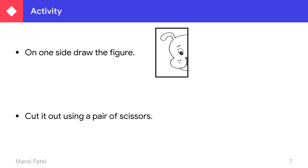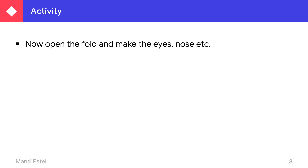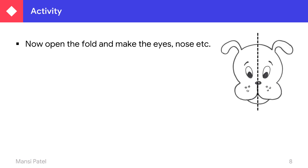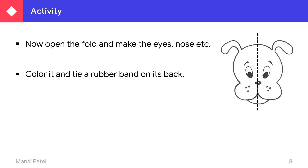Cut it out using a pair of scissors. What you have to do — you have to just cut this extra blank paper. When you cut this blank paper with the help of the scissors, your half portion looks like this. Then open that fold and make the eyes and nose, etc. When you open that fold which you already cut, it looks like this — and then you just draw their eyes and nose. Then just color it and tie a rubber band on its back. Your mask is ready.